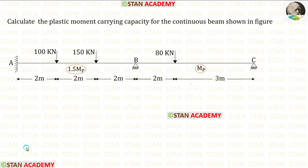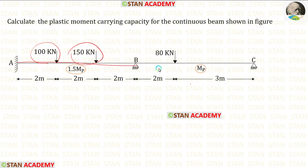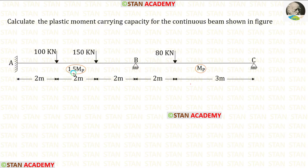A two-span continuous beam is given. In the span AB, there are two point loads: 100 kN and 150 kN. In the span BC, we have a point load of 80 kN. In the span AB, the plastic moment capacity is 1.5 Mb, and for span BC, it is Mb.